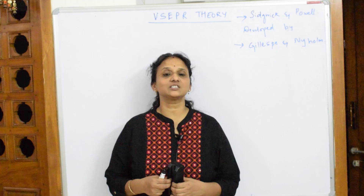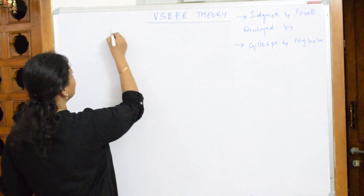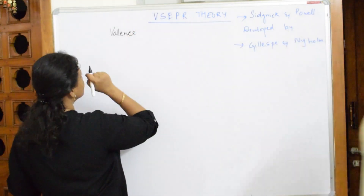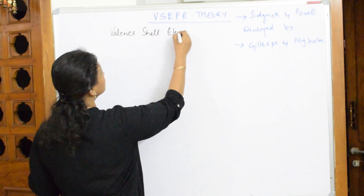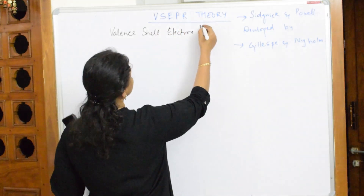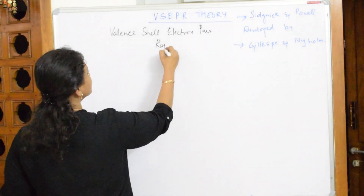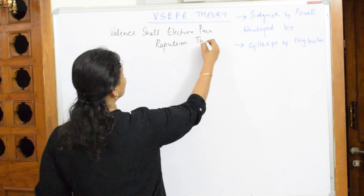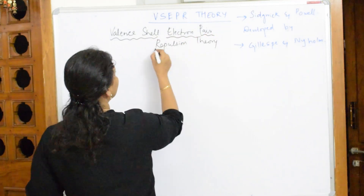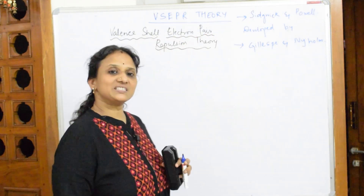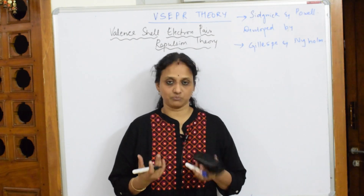Now we move to the next theory — VSEPR theory. Let us write the full form: V stands for Valence, S stands for Shell, E stands for Electron, P stands for Pair, R stands for Repulsion. So VSEPR is Valence Shell Electron Pair Repulsion theory. As the name suggests, it explains the concept of repulsion between lone pairs and bond pairs.